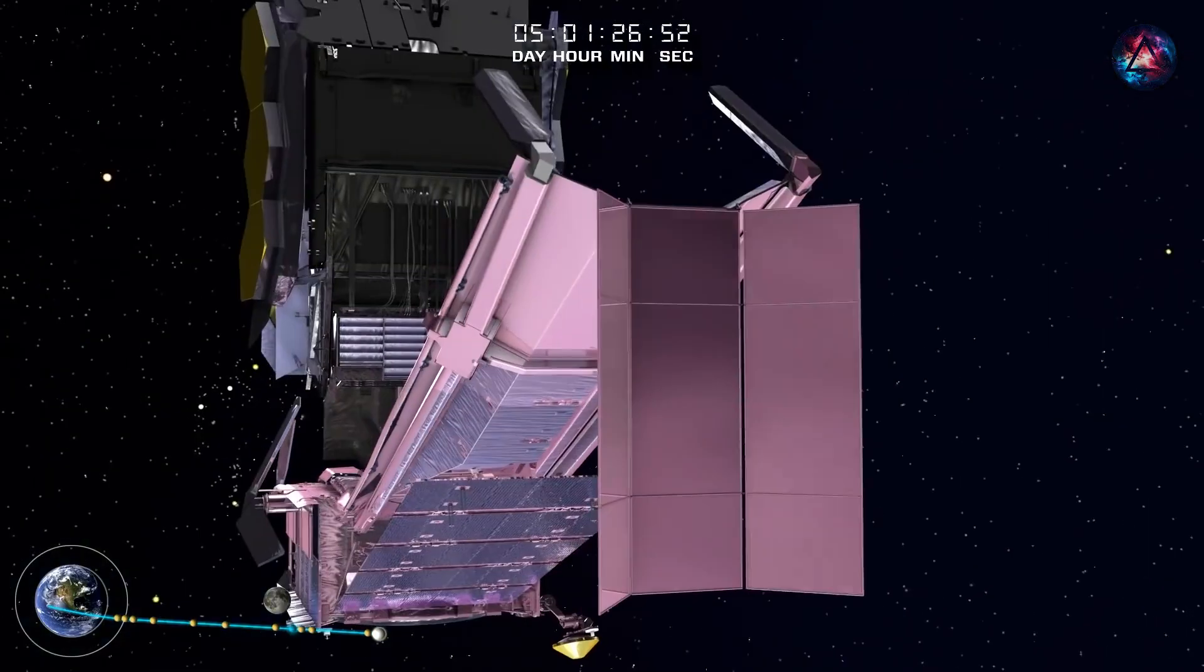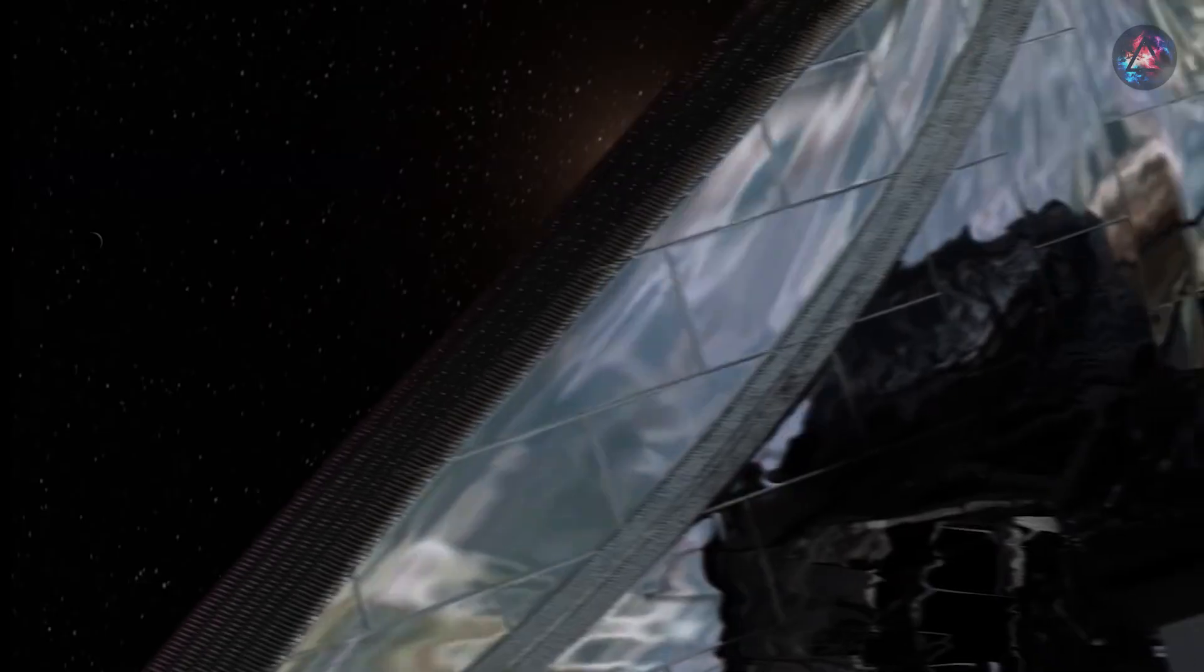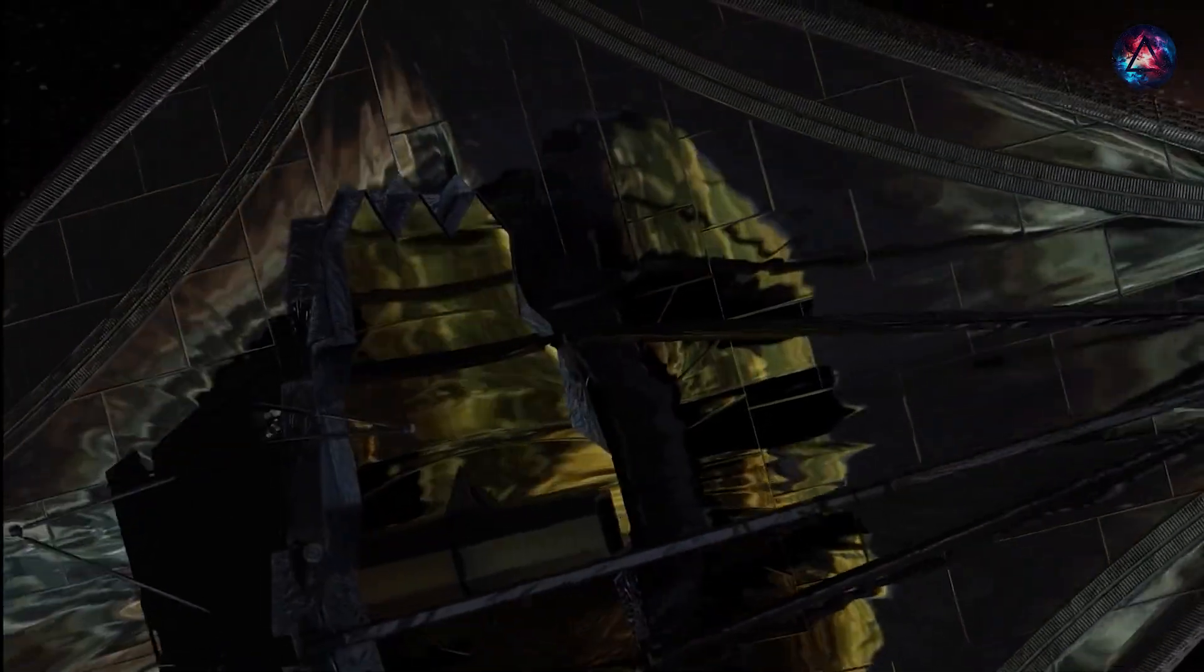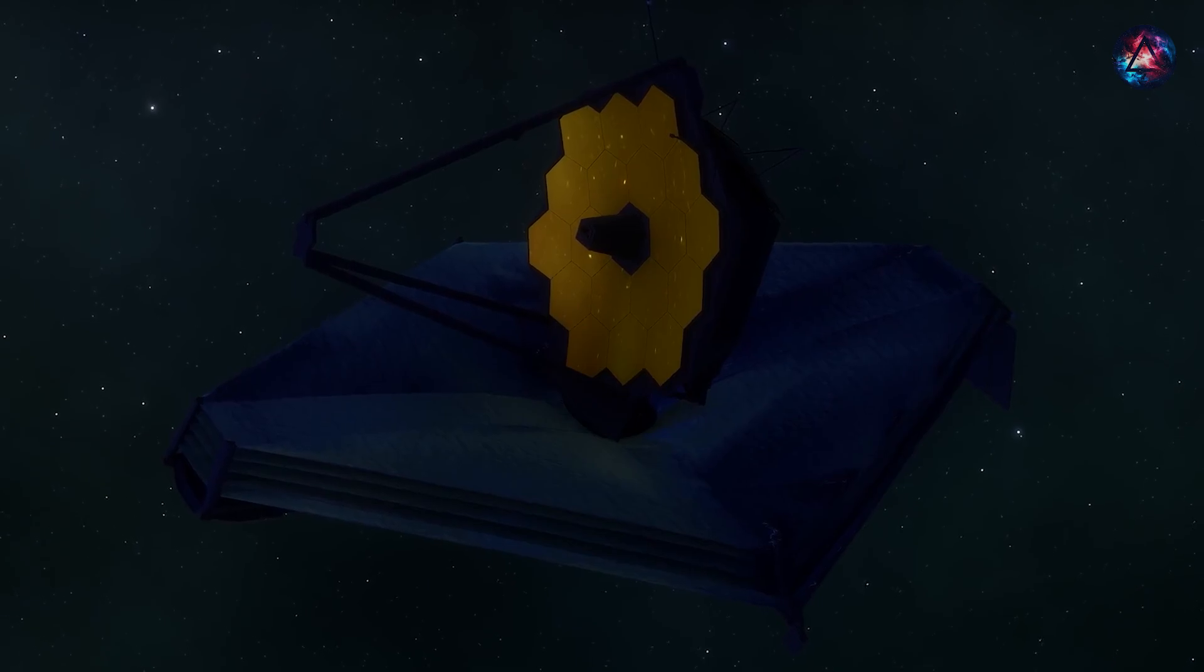Covering nearly a million miles, it positioned itself at L2, a stable location opposite the sun in relation to Earth's orbit.